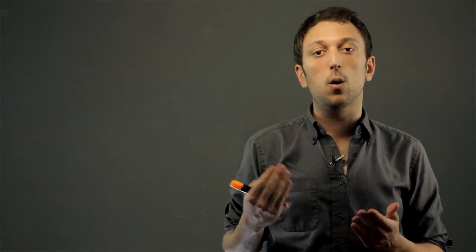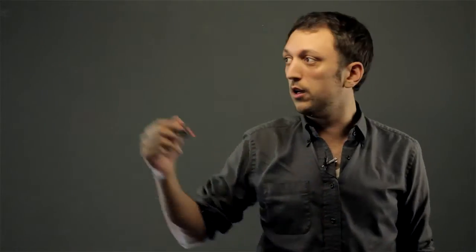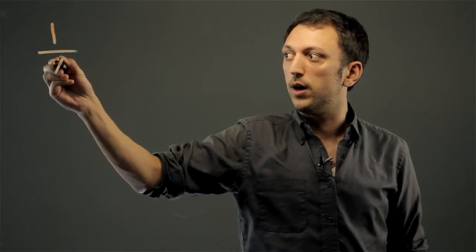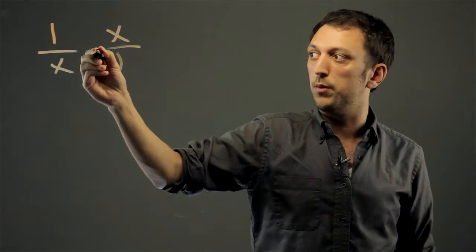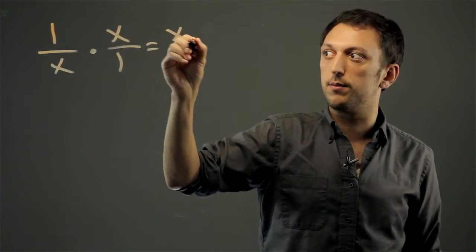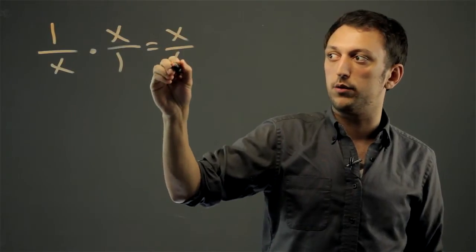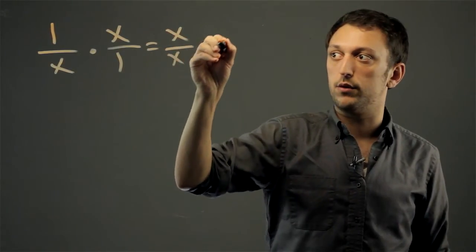Now, 1 divided by X is also called a reciprocal or a multiplicative inverse. So the opposite of 1 over X would be X over 1, in which we would multiply and we'd get 1 times X equals X, X times 1 equals X, and this equals 1.